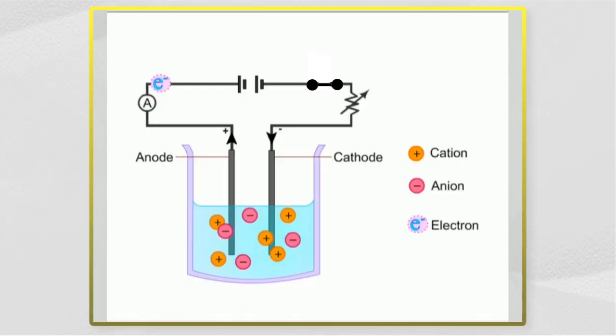In molten form, cations and anions in ionic compounds are free to move to carry electrical charges.